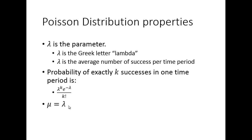The mean of a Poisson distribution is lambda — which makes sense, since lambda is defined as the average number of successes per time period. The standard deviation is the square root of lambda. Just memorize or look up these formulas when needed.